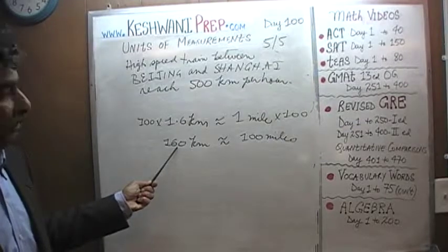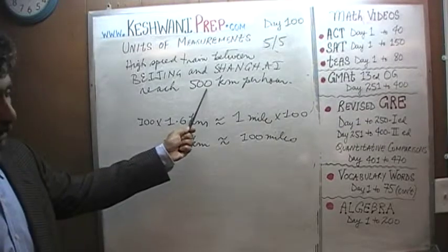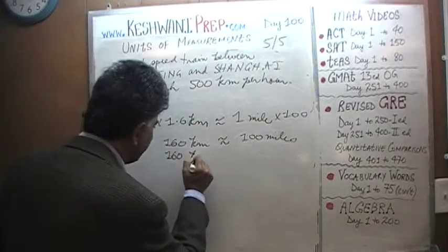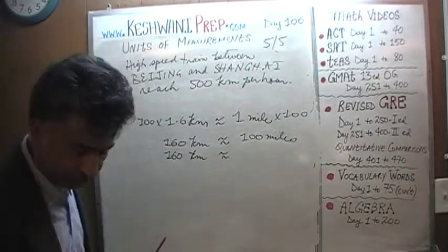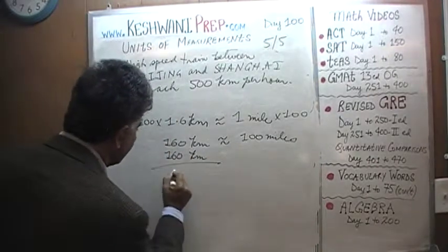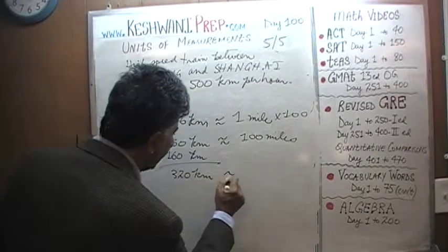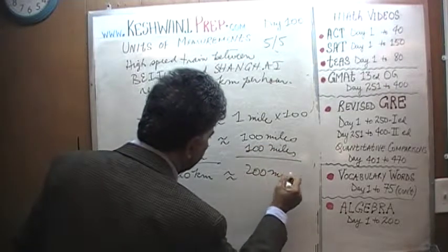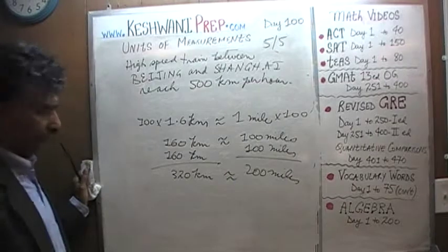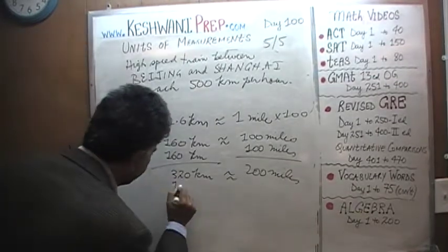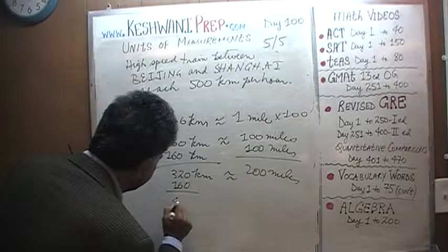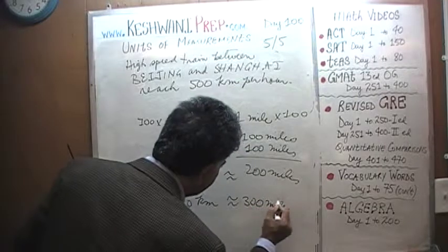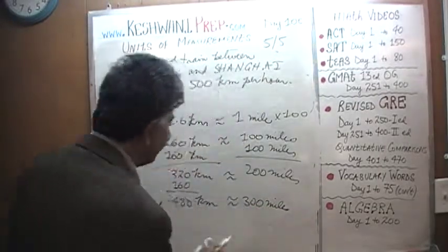160 kilometers is 100 miles. The train is not going at 160 kilometers per hour. It is going 500 kilometers per hour. This is already 100 miles. Let's add another 160 kilometers to it. If we add another 160 kilometers, we get 320 kilometers, and that will be 200 miles. But still not close. We want 500. Let's add another 160. 480 kilometers turns out is approximately 300 miles.